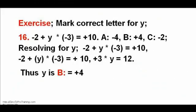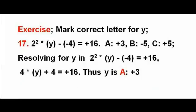Multiple choice exercise: resolving brackets, division, multiplication, add and subtract gives y = 4, which is B of the list. Next exercise: resolving brackets, division, multiplication, add and subtract gives y = 3, which is A of the list.